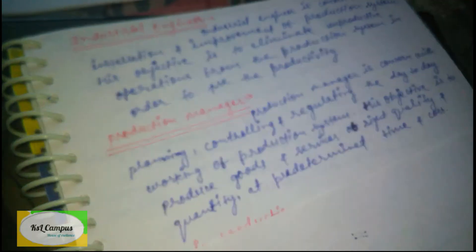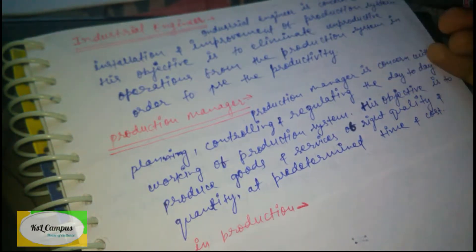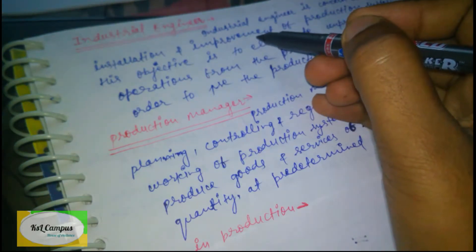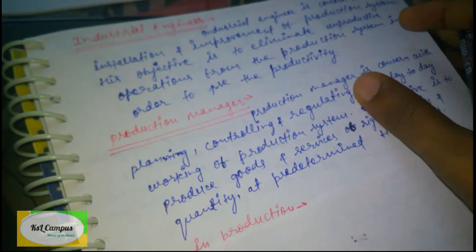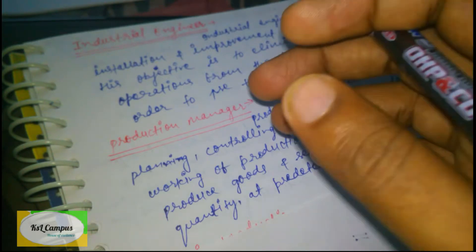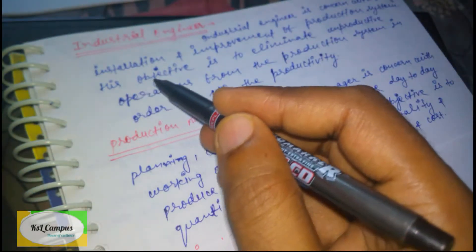This is the third video, in which we have to study the Industrial Engineer and Production Manager. The Industrial Engineer is concerned with design, installation, and improvement of the production system — designing, installing, or improving the career of a production system in industry.